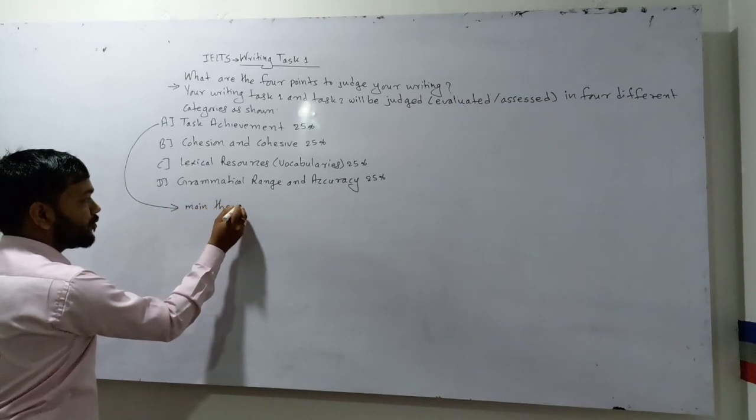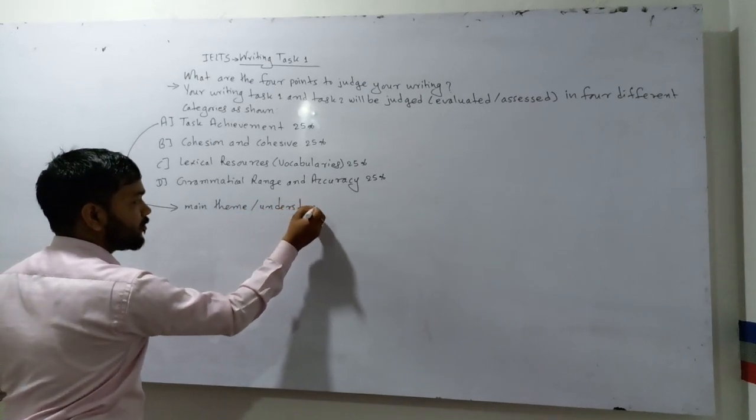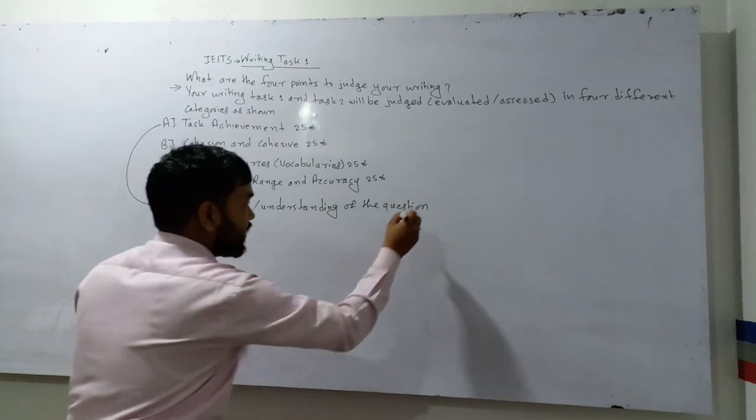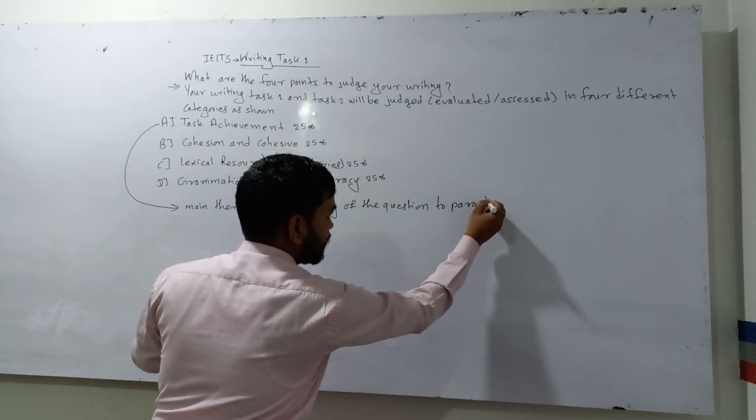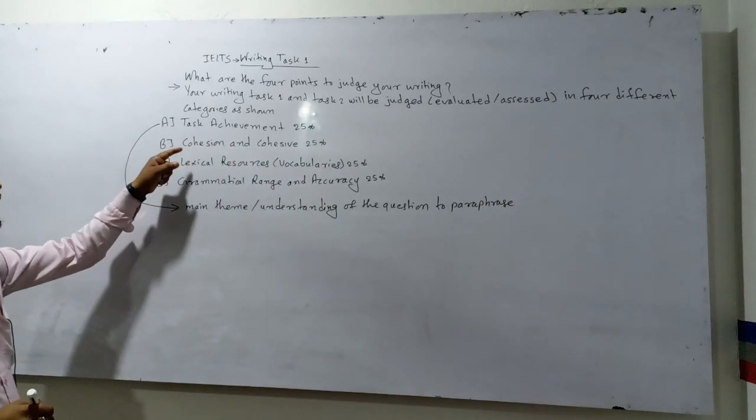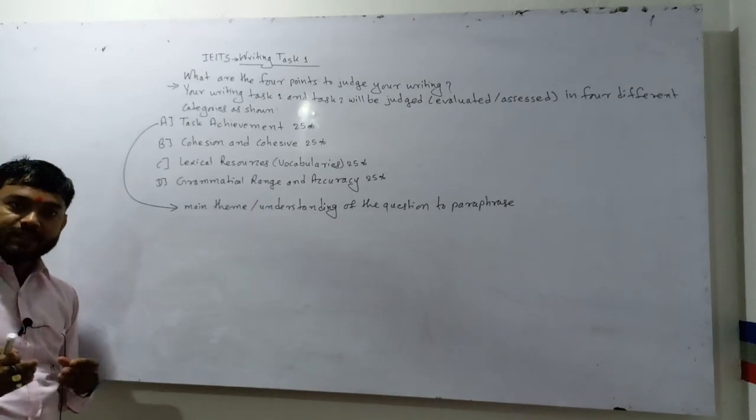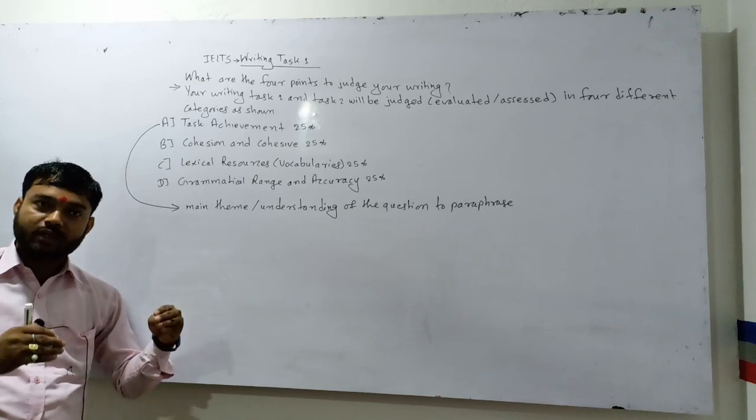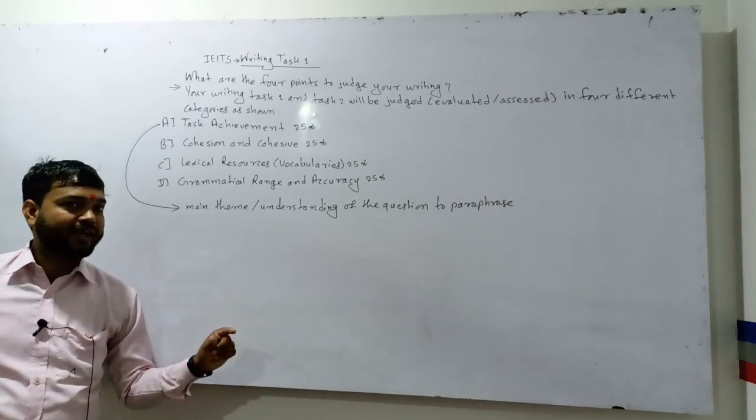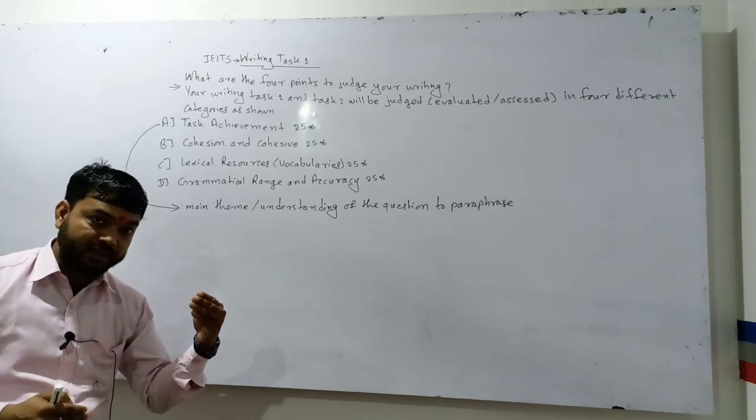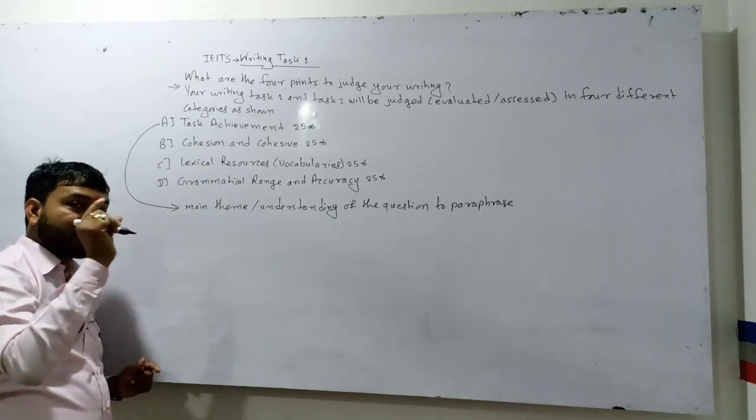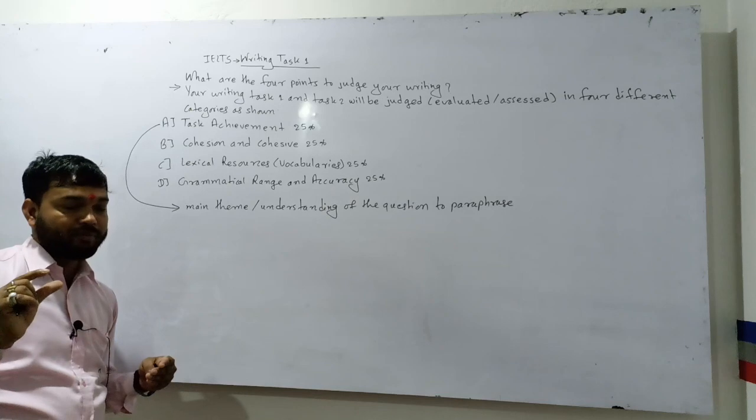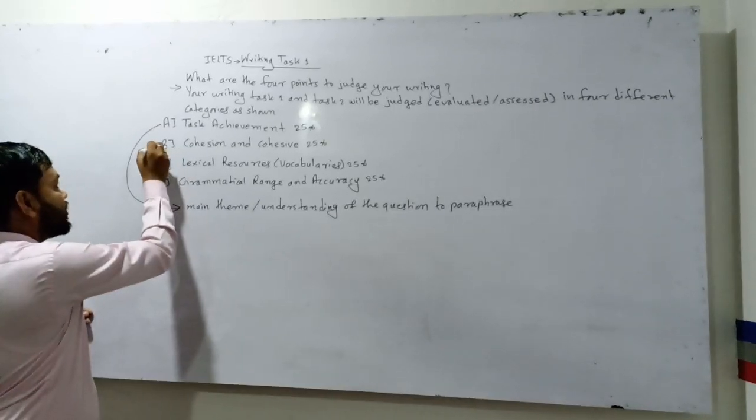What do you understand? Task Achievement means the main theme or understanding of the question to explain or paraphrase. Next is Cohesion and Cohesive. Cohesion means you should write in chronological order. When you write in chronological or sequential order, your answer can be meaningful. Cohesive means to maintain the writing structure, form, and linguistic terms clearly.